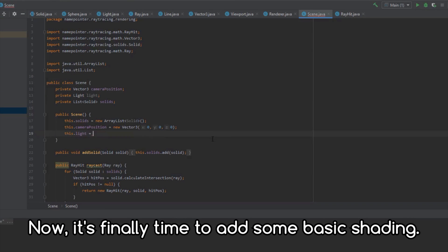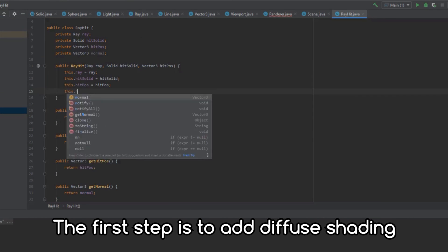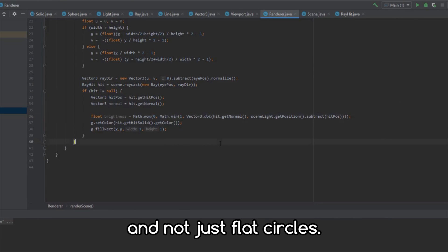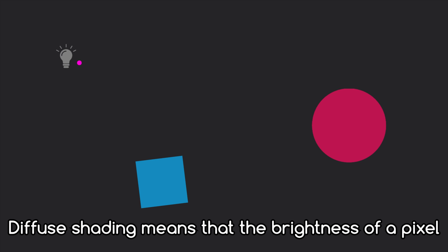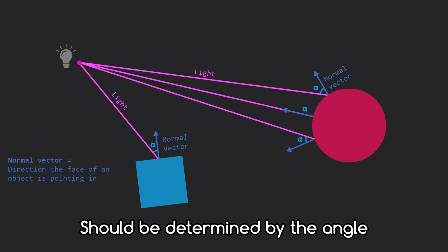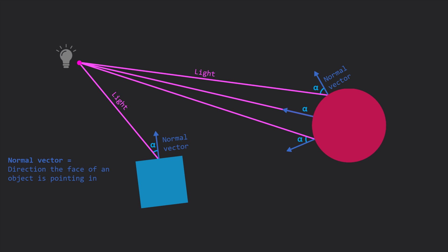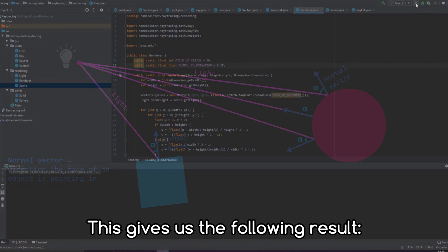Now, it's finally time to add some basic shading. The first step is to add diffuse shading, which will make the spheres look more like spheres and not just flat circles. Diffuse shading means that the brightness of a pixel should be determined by the angle at which the light touches an object's surface. This gives us the following result.